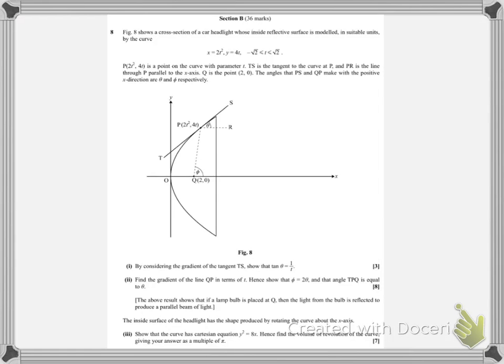This is a C4 section B question, worth about 18 marks. It's a question on parametrics, and a lot of people find this type of question quite daunting when they look at it. We can clearly see it's a parametric equations question because we've got x and y both in terms of this parameter t, where t is going to be taking values between minus root 2 and root 2.